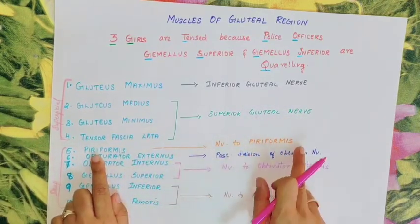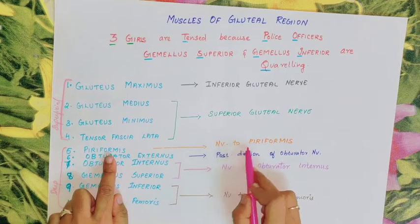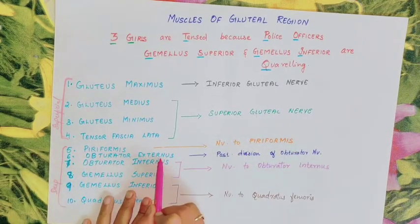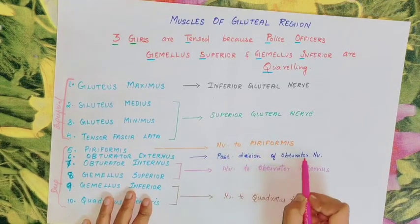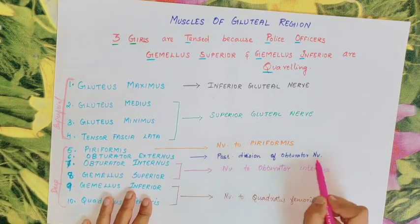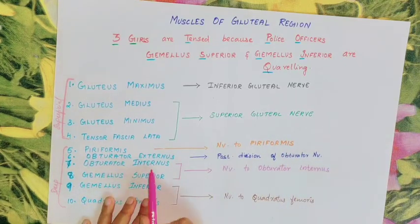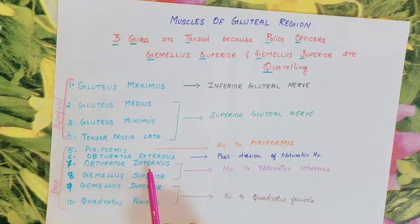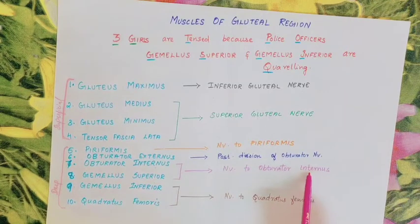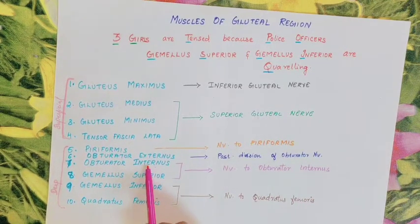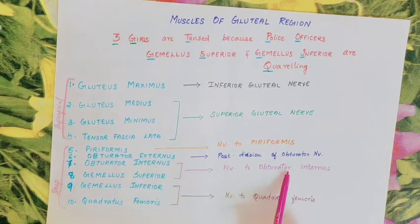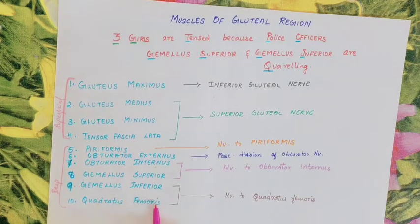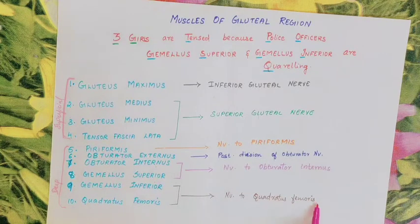Next, Piriformis — that is easy — it is supplied by the Nerve to Piriformis. Obturator Externus is supplied by the Posterior Division of the Obturator Nerve. Obturator Internus and Gemellus Superior — these two muscles — are both supplied by the Nerve to Obturator Internus. The last two muscles, Gemellus Inferior and Quadratus Femoris, are both supplied by the Nerve to Quadratus Femoris.